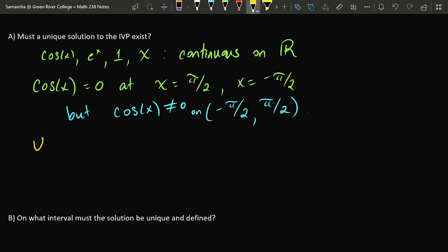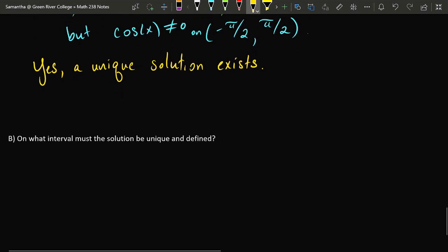So yes, a unique solution to the IVP must exist. And not only that, we know that the solution is unique and defined on the interval from -π/2 to π/2. As long as you're only considering x's in this interval, you are good to go. Your solution will be defined, and it's the only solution.